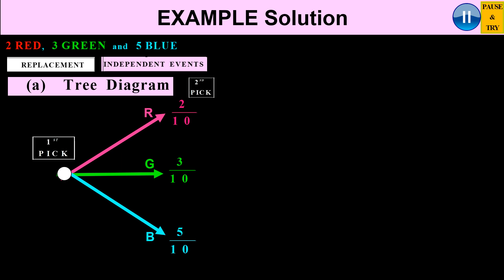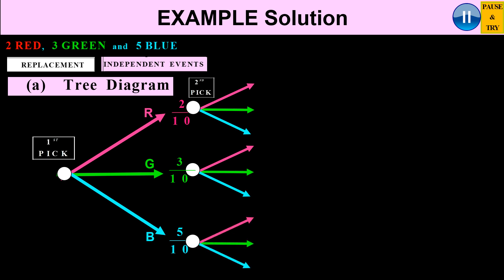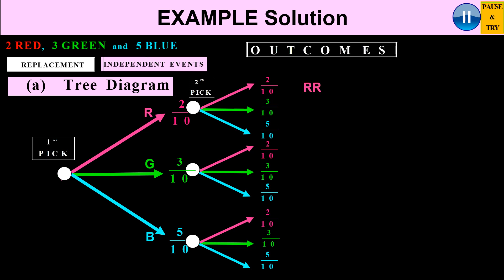Now for the second pick — since I put the paper clip back, once I take one out I replace it again. So in my second pick I can again choose red, green, or blue, with exactly the same probabilities after any first choice. Because I've replaced the paper clip, my sample space size has not changed. So I still have exactly the same probability values: 2 over 10, 3 over 10, and 5 over 10.